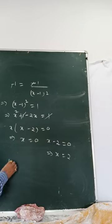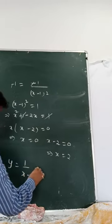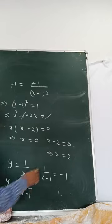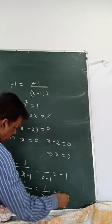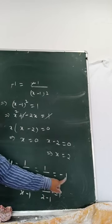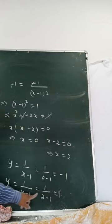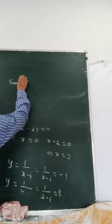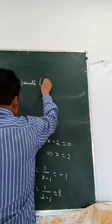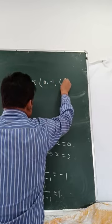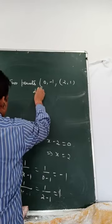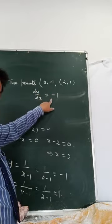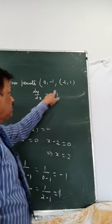When x equals 0: y equals 1 by 0 minus 1 equals minus 1. When x equals 2: y equals 1 by 2 minus 1 equals 1. So we get two points: (0, minus 1) and (2, 1), with slope dy by dx equals minus 1.